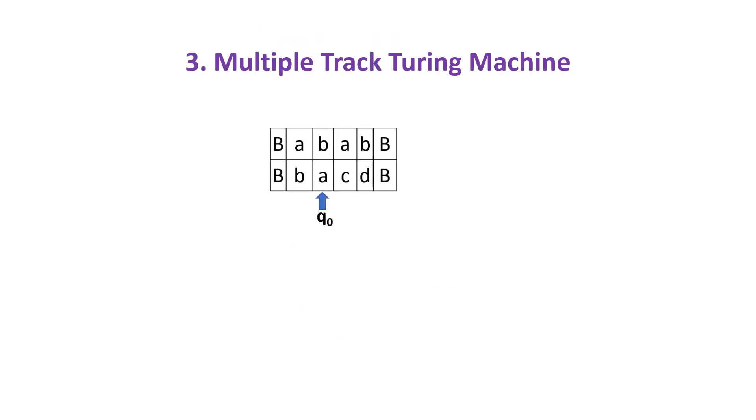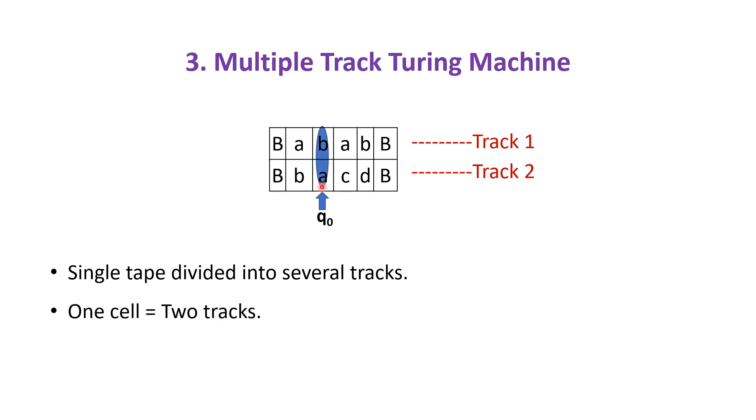A single tape can be divided into several tracks. Here one cell is divided into two tracks. (B, A) is one symbol, so each tape symbol can be a composite of characters rather than just a single one.